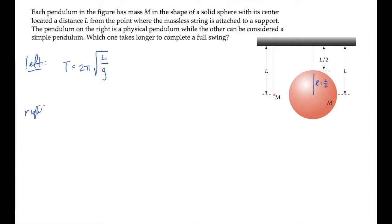The pendulum on the right is a physical pendulum, with a period of 2 pi square root moment of inertia over mg times d, where i is the moment of inertia about the pivot, the attachment point, and d is the distance from the center of mass to the attachment point. That's capital L in our case.